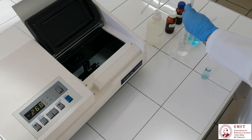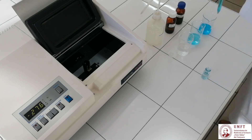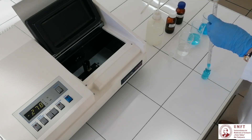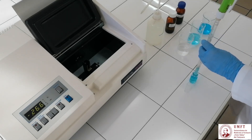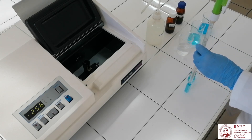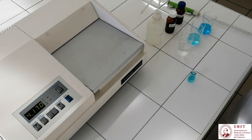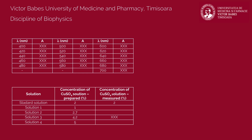Using a graded pipette, measure the volumes of the two solutions and mix them in a bottle. Using the same pipette, transfer the prepared dilution into a cuvette, which you will then place into the spectrophotometer. Read the concentration value shown on the display and write it in the second table. Repeat the steps to prepare the other three dilutions, determine their concentrations, and fill the remaining values in the table.